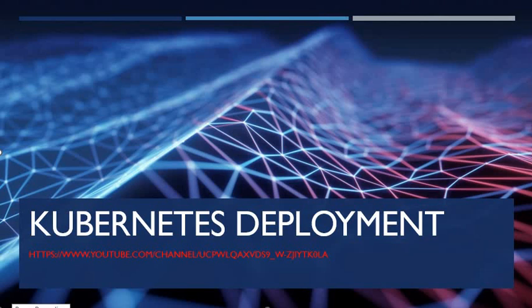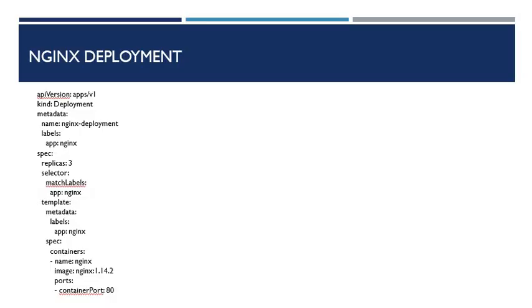So let's have a look at the Nginx deployment.yaml file. I will explain it. This is the Nginx deployment file. You can save it as nginx-deployment.yaml. The main things you have to give: the API version, that is the first line, and the kind, which is deployment. In metadata, you give the name of the Nginx deployment.